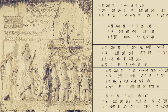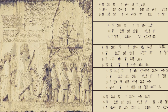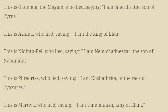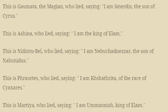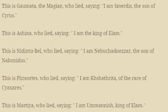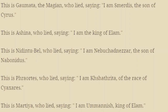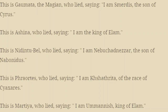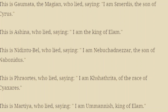These are a few inscriptions regarding the rebellion kings, written on the rock, telling about their committed crimes. This is Gaumata the Magian, who lied, saying: I am Smerdis, the son of Cyrus. This is Ashina, who lied, saying: I am the king of Elam. This is Nadintu-Bel, who lied, saying: I am Nebuchadnezzar, the son of Nabonidus. This is Phraortes, who lied, saying: I am Shathrita of the race of Cyaxares. This is Mardia, who lied, saying: I am Umanish, king of Elam.